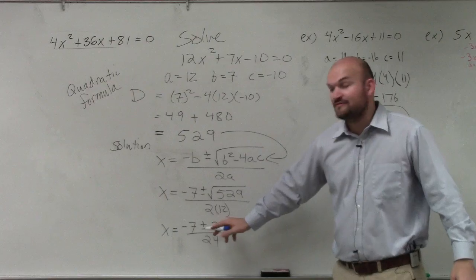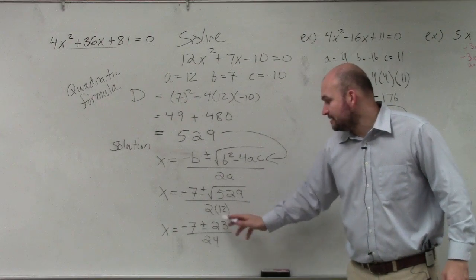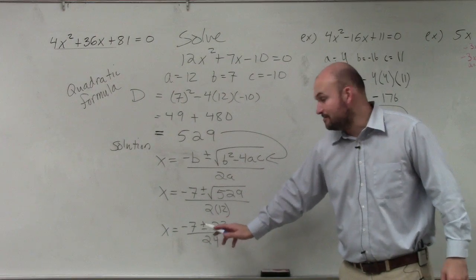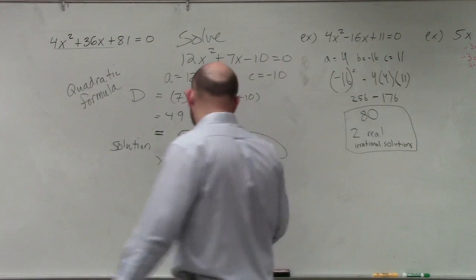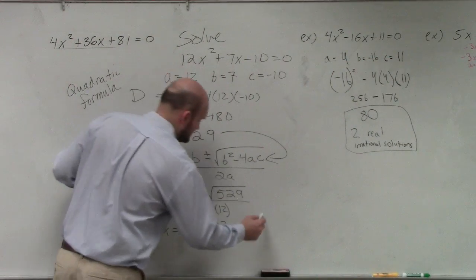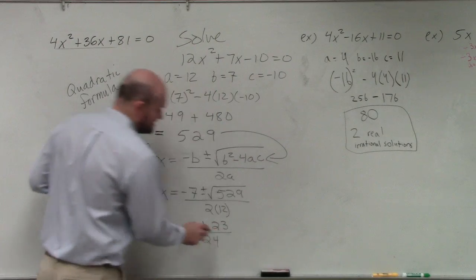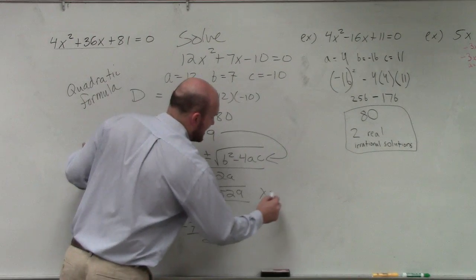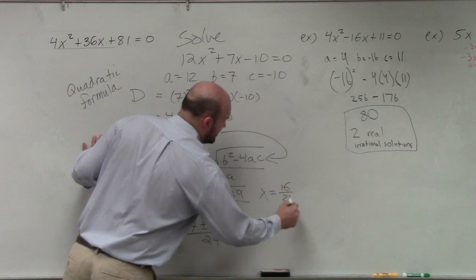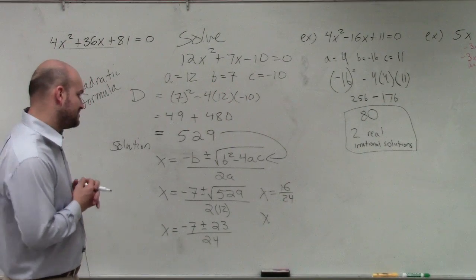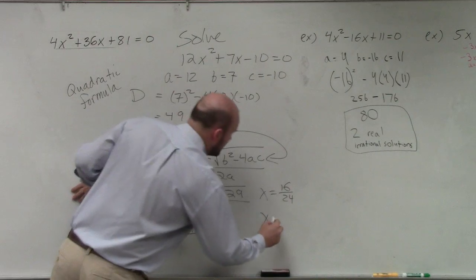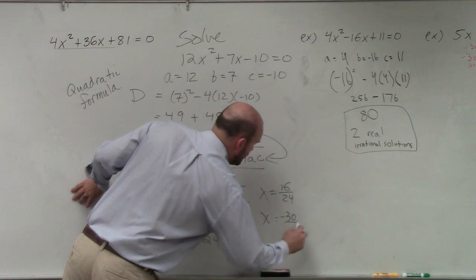So what we're going to have to do is we're going to have to find both of them. So negative 7 plus 23, so we have to do plus and minus. Negative 7 plus 23 is going to be 16, and then 16 over 24. So we could say x equals 16 over 24. And then let's do negative 7 minus 23 is going to be a negative 30, or x equals negative 30 over 24.